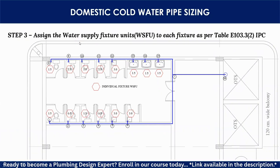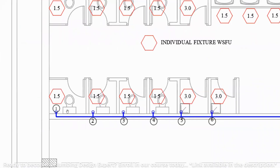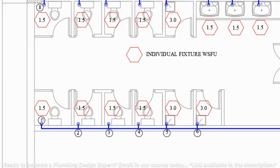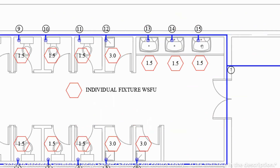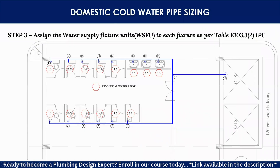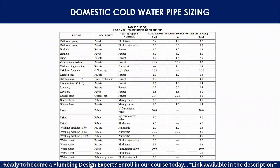Step 3: assign the Water Supply Fixture Units (WSFU) to each fixture as per table E103.3 of the IPC (International Plumbing Code). Each fixture has an assigned WSFU value. For example, for a lavatory the WSFU is 1.5. You get this from table E103.3 — as shown in the next slide, for a public lavatory the cold water supply WSFU is 1.5.